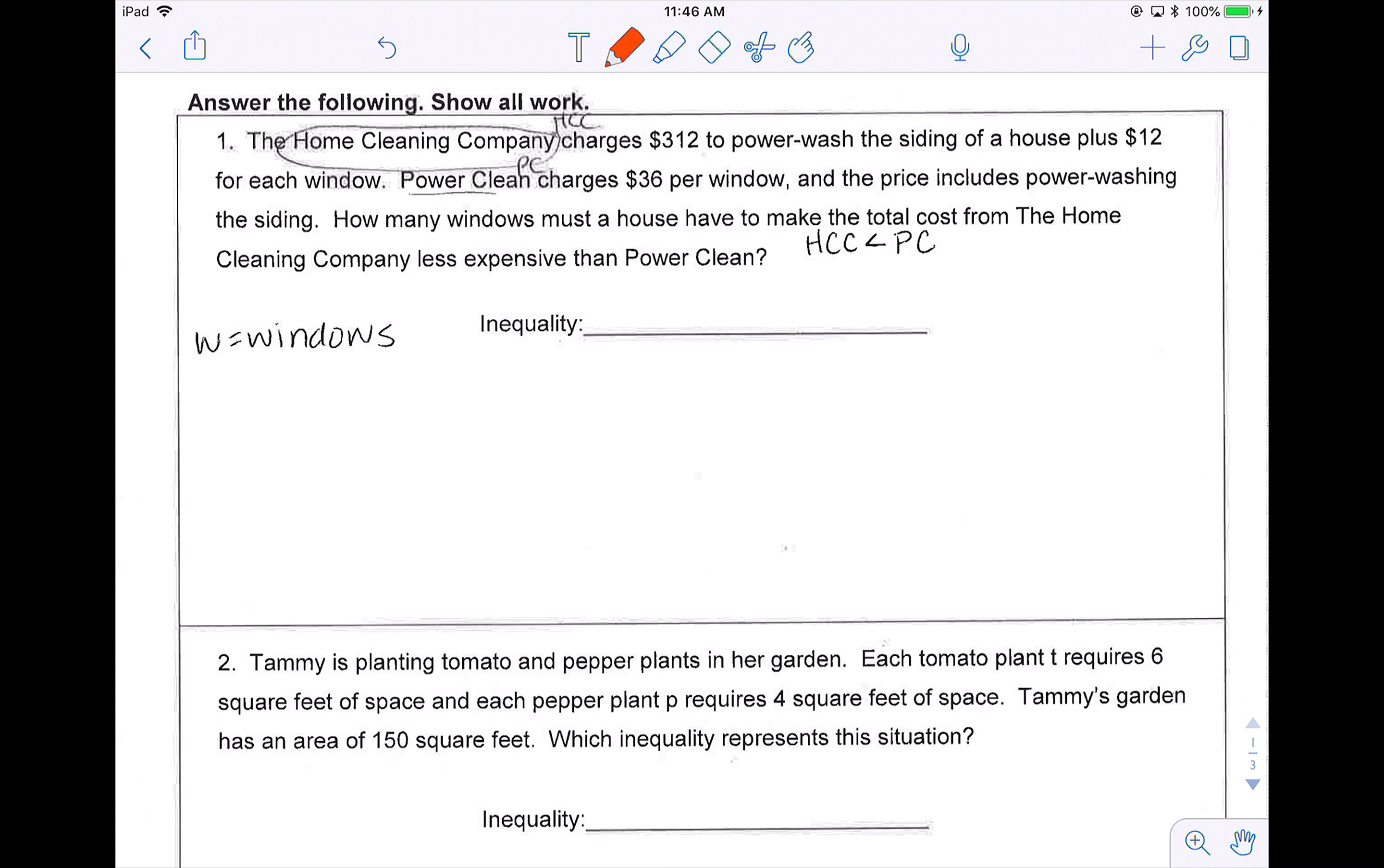Problem one says the home cleaning company (HCC) charges $312 to power wash the siding of a house plus $12 for each window. PowerClean (PC) charges $36 per window and the price includes power washing the siding. How many windows must a house have to make the total cost from the home cleaning company less expensive than PowerClean?